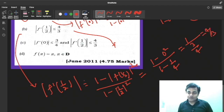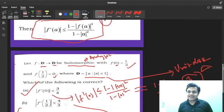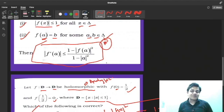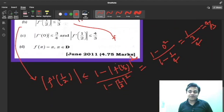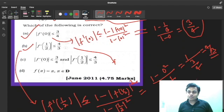You people can say, don't forget to use this inequality once again. Mod F dash a is less than or equal to, so certainly it should be less than or equal to 4 by 3. You will not hesitate to say that your B is right because in B, it is also given that mod F dash half is less than or equal to 4 by 3. So both A and B are true. C is also true because 4.75 marks. You cannot skip a single option, otherwise you will get 0.